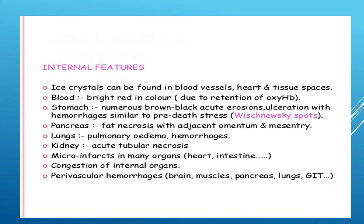Internal post-mortem findings include ice crystals in blood vessels, heart, and tissues; blood becomes bright red due to retention of oxyhemoglobin. The stomach shows numerous brown-black acute erosions and ulcerations with hemorrhage — Wischnewski spots — present in more than 90% of hypothermia deaths. The pancreas shows fat necrosis with adjacent omentum and mesentery involvement; lungs show pulmonary edema and hemorrhages; kidneys show acute tubular necrosis; heart and intestines show micro-infarcts; and all organs show congestion and perivascular hemorrhages.